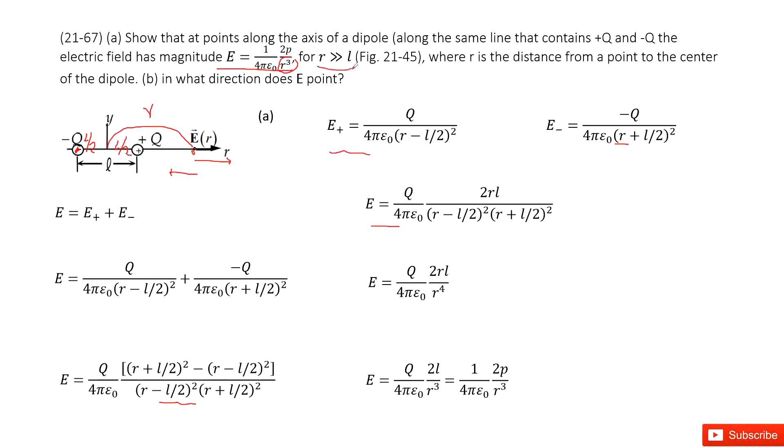And also it gives you a hint, the keyword. Tell you r is much larger than l. So that means in this term compared to a very large r, this term l over 2 can be ignored. And this term can be ignored. Do you agree?